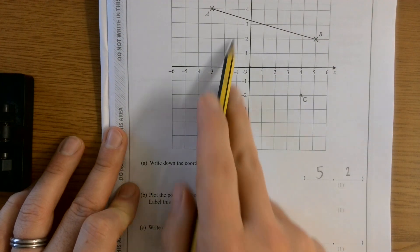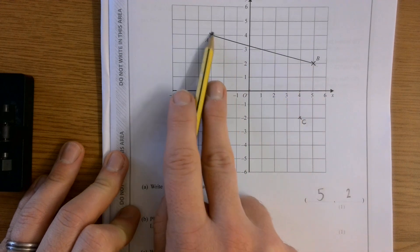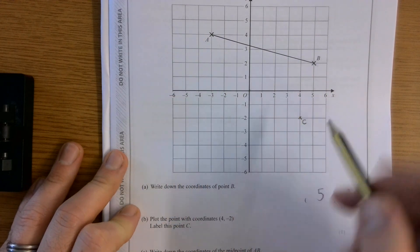And write down the coordinates of the midpoint of AB. Right. Now, I can see, if I'm trying to visualize where the middle of this line is, it's here.